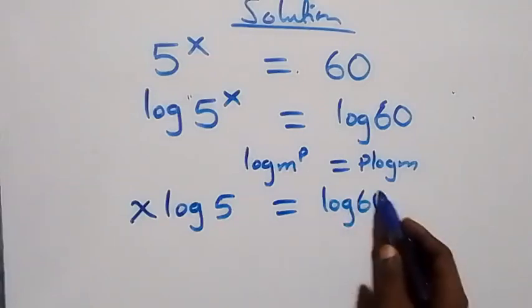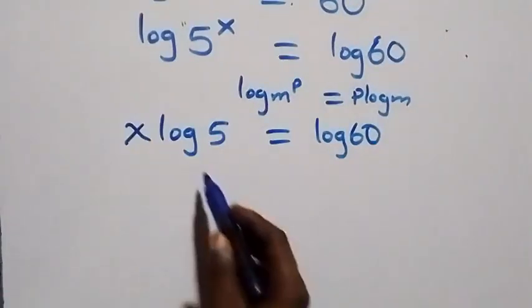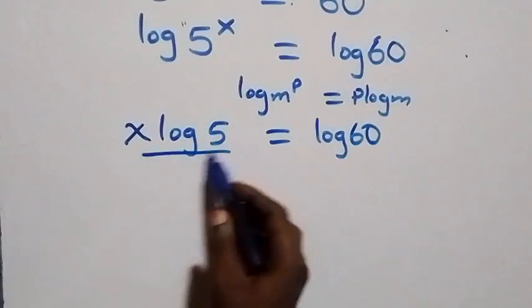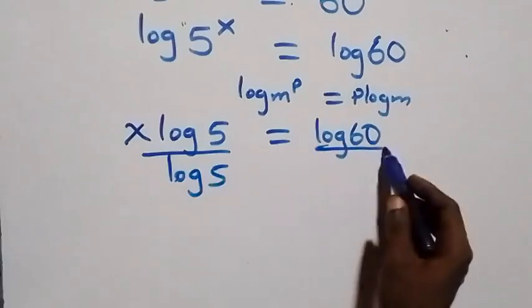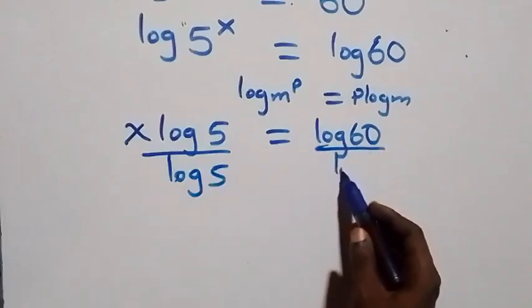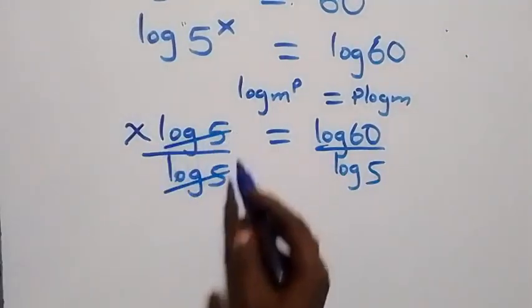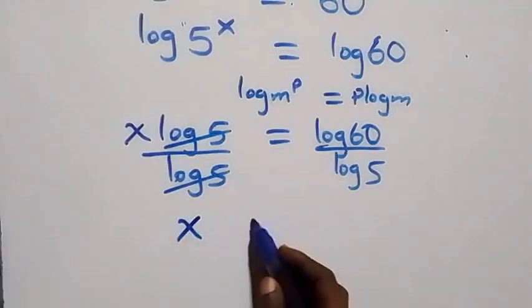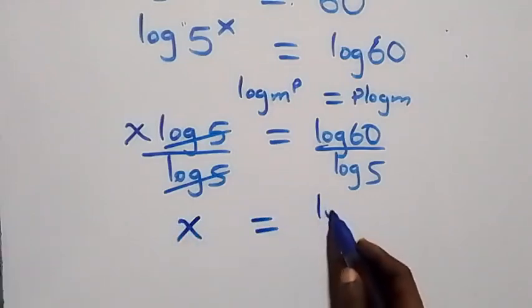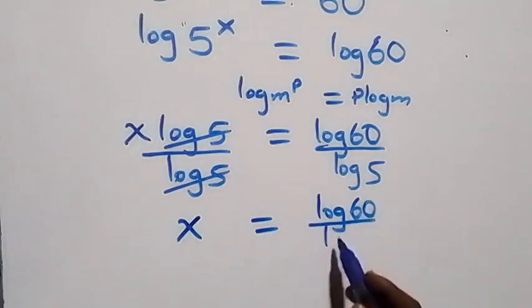Next step: we divide both sides by log5. The log5 terms cancel on the left, leaving x equals log60 over log5.